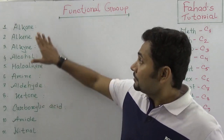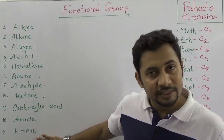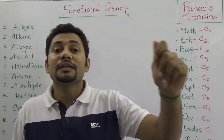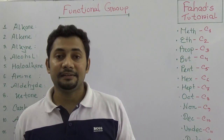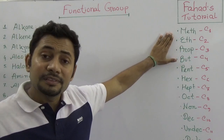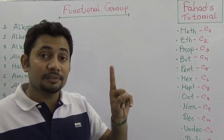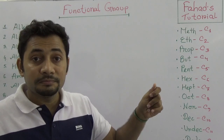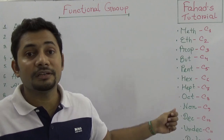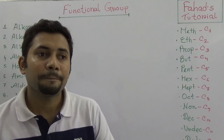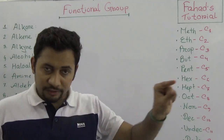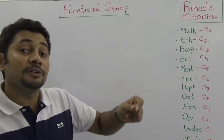Based on the number of carbons, we name the compounds. If there is one carbon we say meth-, then eth-, prop-, but-, pent-, hex-, hept-, oct-, non-, dec-, undec-, dodec-. So we look at two things: first the number of carbons, and second the functional group, then we try to name the compound.